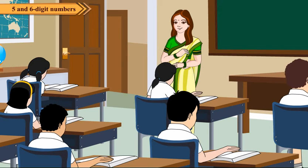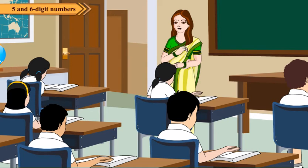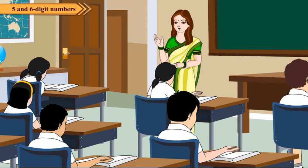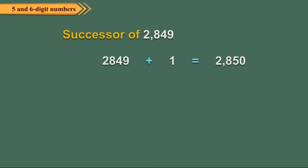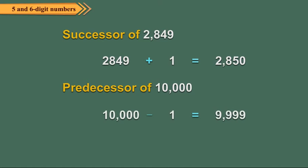Do you know what we get when we add or subtract 1 from a number? One more than a number is called its successor, and 1 less than a number is called its predecessor. For example, the successor of 2,849 is 2,850, and the predecessor of 10,000 is 9,999.